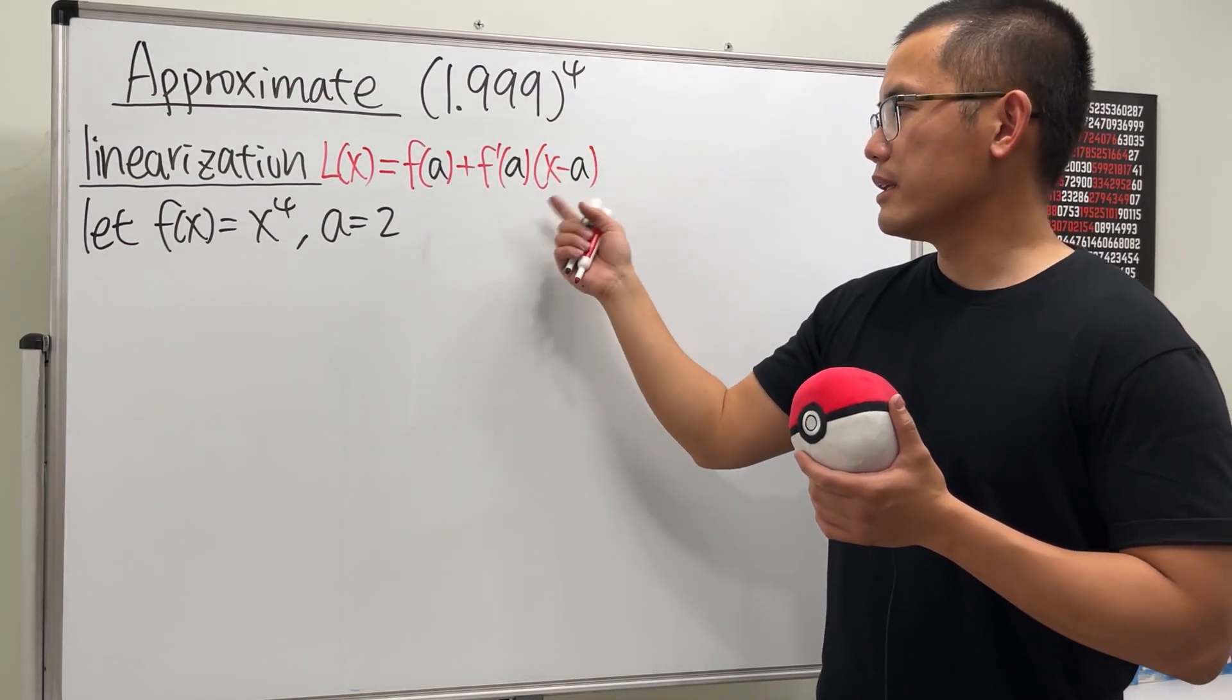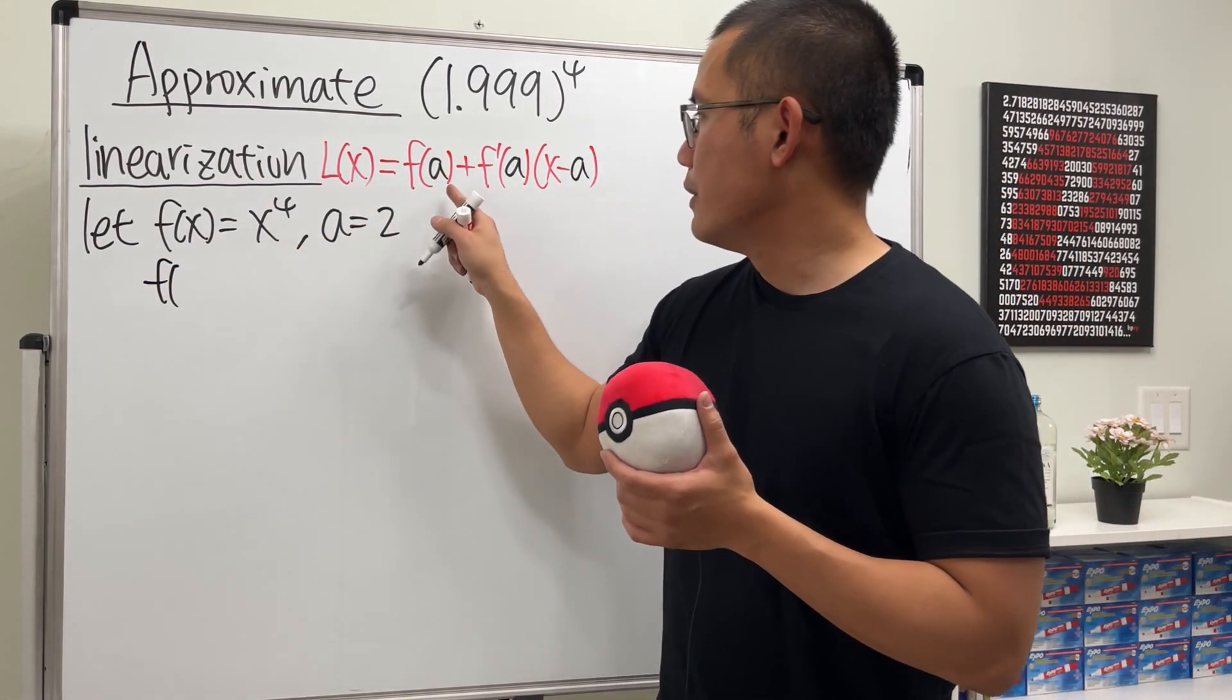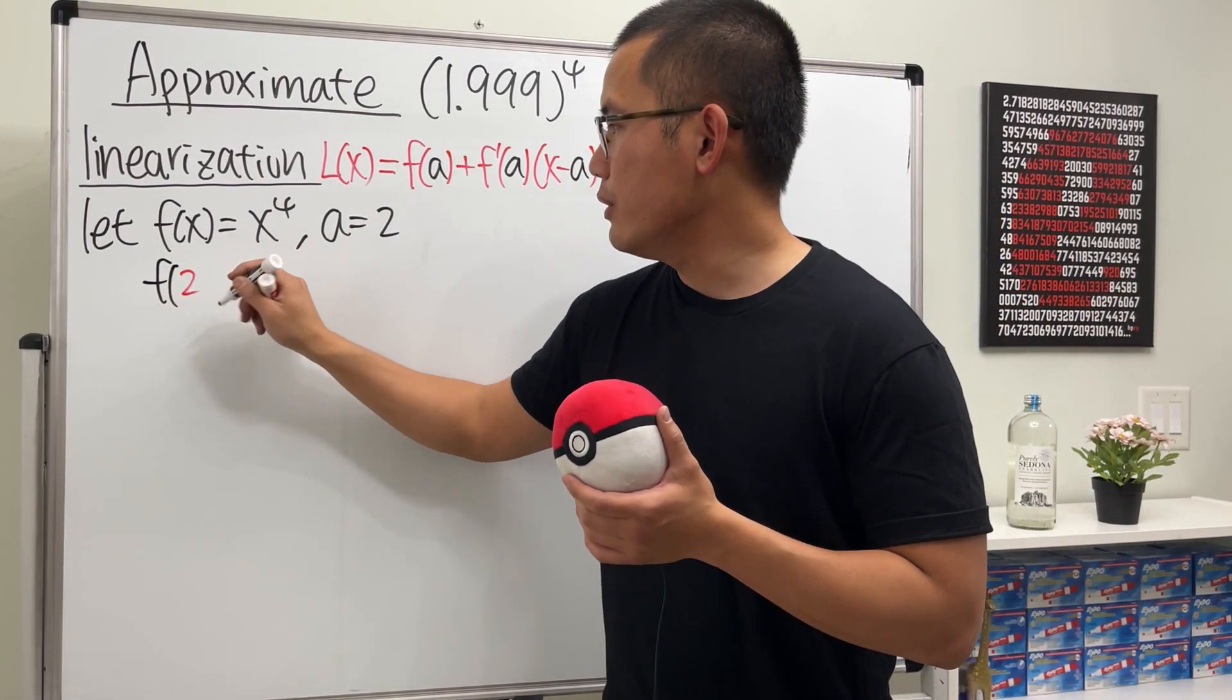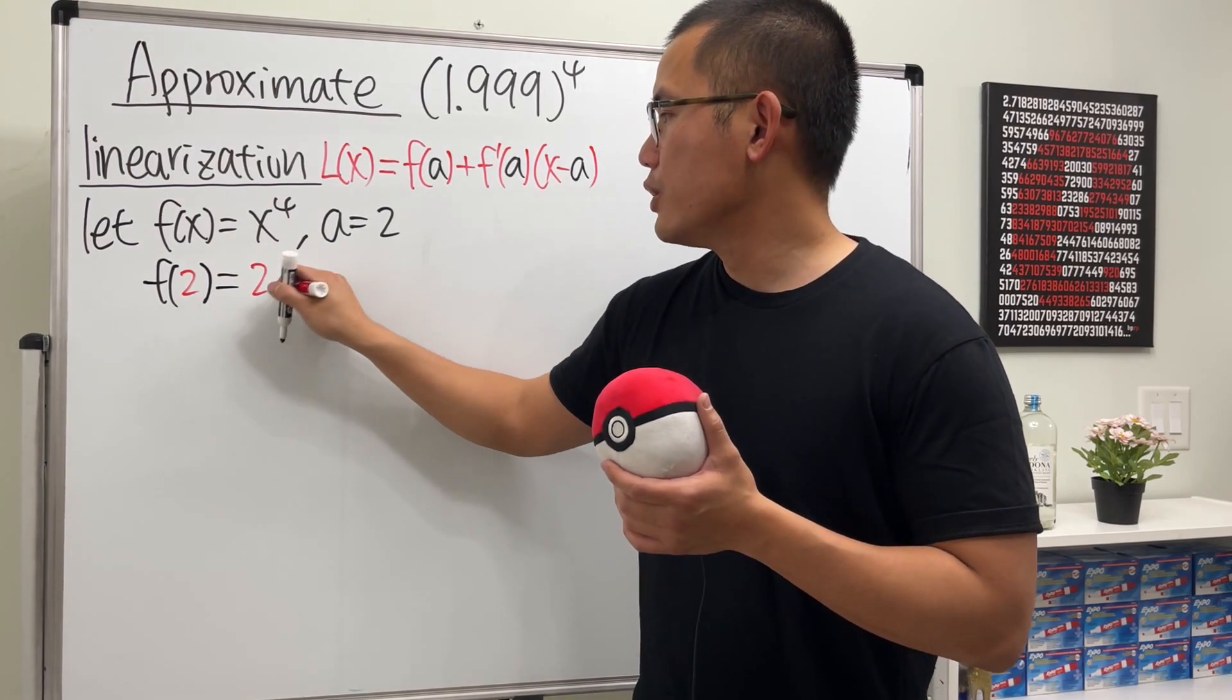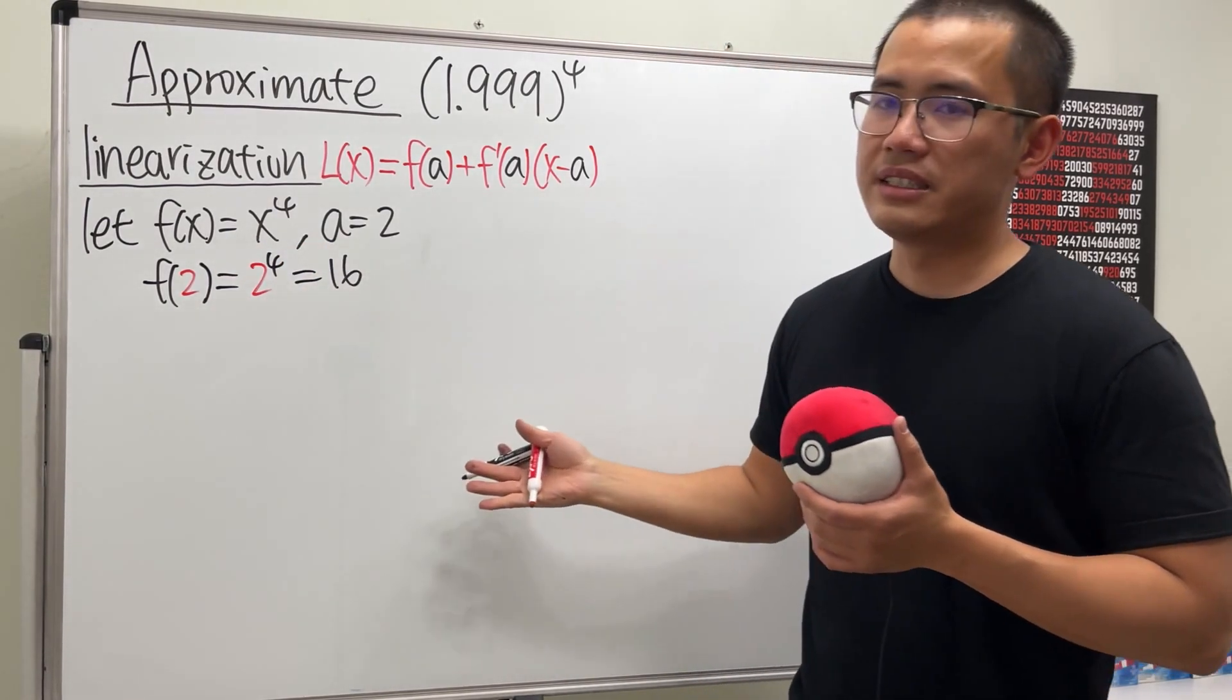Now let's go ahead and get the things that we need. f(a), which is f(2). You see, this is much easier—it's just 2^4, and that will be 16.